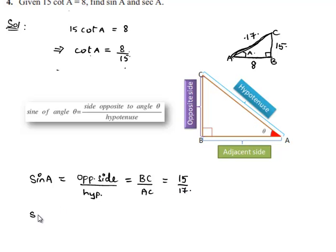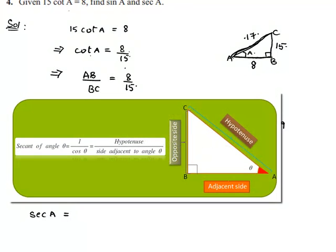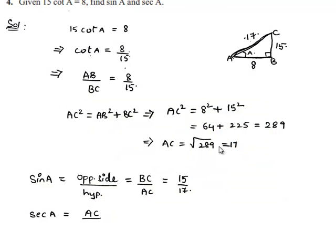And in the second part he asked us to find secant A. We know that secant of an angle is equal to its hypotenuse by the adjacent side. So here the hypotenuse is AC and adjacent side here is AB for angle A, which is equal to AC is 17 and AB is 8. Therefore secant A is equal to 17 by 8.